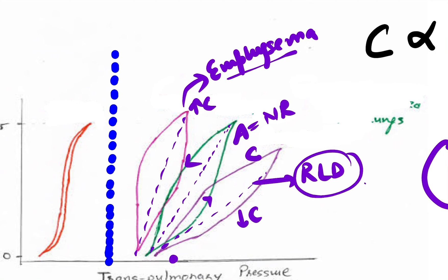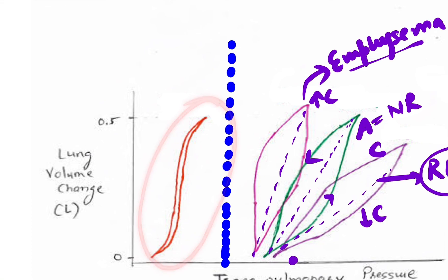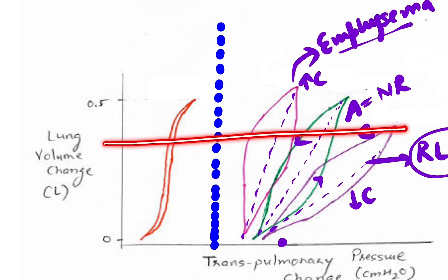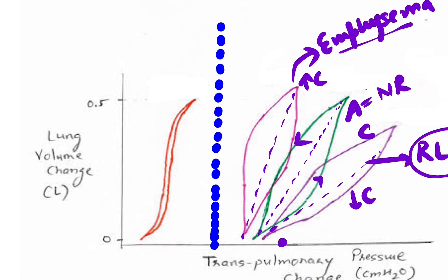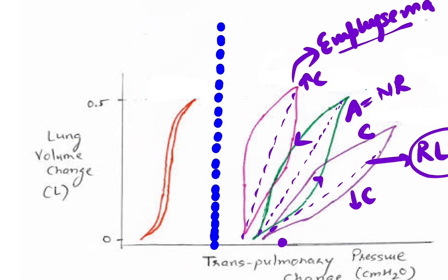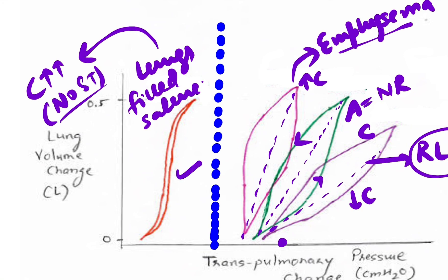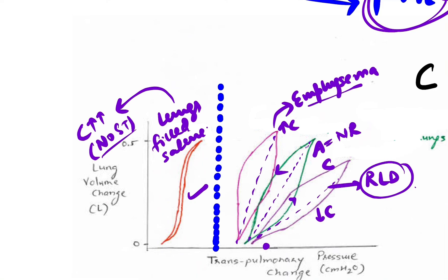There is a fourth curve showing compliance greater than all three others — only a small pressure change is required to produce a large volume change. This is the curve for lungs filled with saline, where compliance is very high because there is no surface tension. So: saline-filled lungs have the highest compliance, then normal lungs, then emphysema, then restrictive lung diseases.